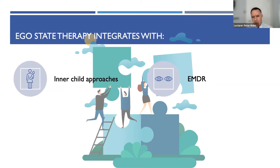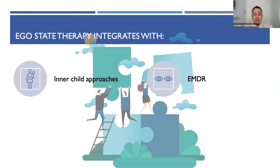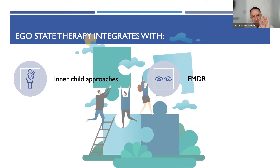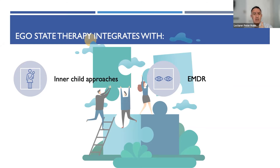With EMDR — eye movement desensitization and reprocessing — a very powerful trauma technique, along with working with other things. What we found, and what the research is showing, is that this thing called the node in EMDR — the target, the element that you're focusing on with regards to processing trauma using eye movements or whatever stimuli you're using — that node they've now started thinking is potentially an ego state. So if you're having problems processing a node, you can treat it as an ego state, do some ego state work with it, empower it to have the courage to change, and then go back to the EMDR.